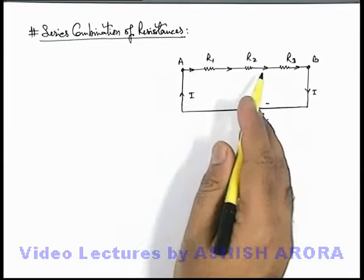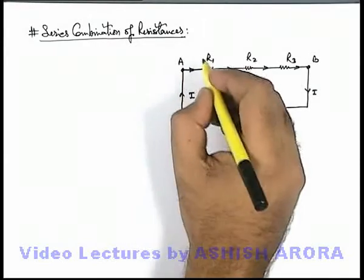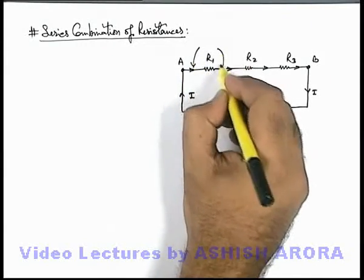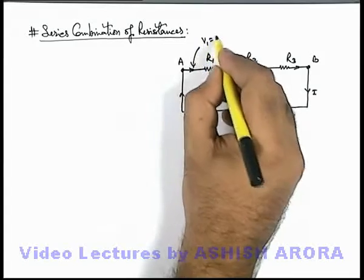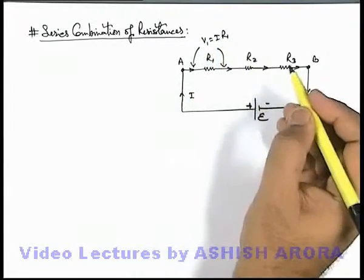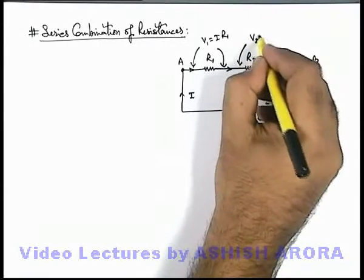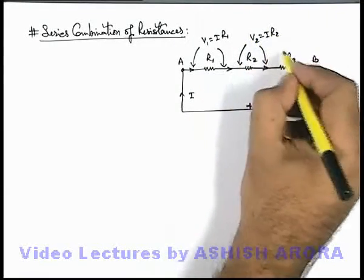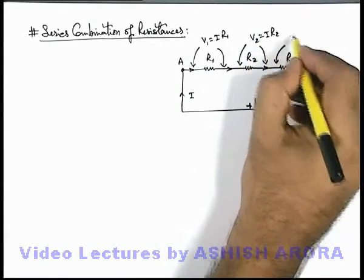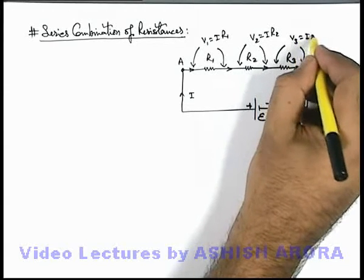And if a current i is flowing, then in this situation we can say the potential difference across the resistance R1, V1, we can write as i R1 according to Ohm's law. The potential difference across the resistance R2 we can write V2 as i R2, and for the third resistance also we can write V3 as i R3.